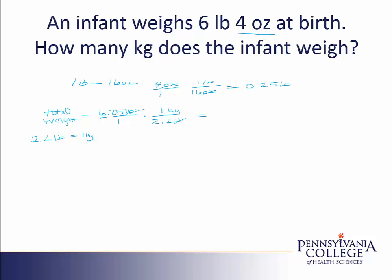Now I'm going to go to my calculator and take 6.25 divided by 2.2. I'll write down my entire number from my calculator — I get 2.8409, and it continues on my calculator. When we're dealing with a baby that is under 10 kilograms, we round to the thousandths place, which is right here. When I round to the thousandths place, this 9 will round the digit up to a 1. So I'm going to give my answer as 2.841 kilograms.